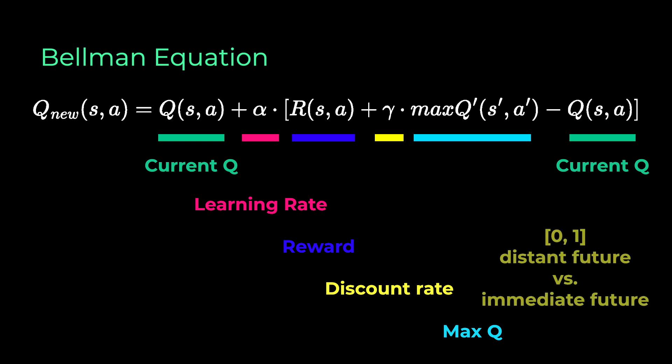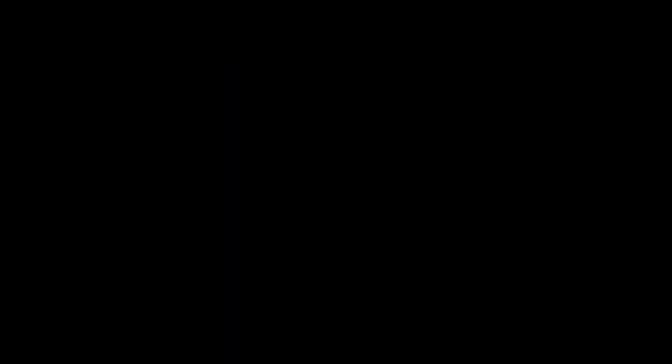The discount rate is a value between zero and one and determines how much the agent cares about rewards in the distant future relative to those in the immediate future. So now we have everything we need. And coming back to our iterative learning approach, we can now come up with a good Q table by using this Q learning algorithm.